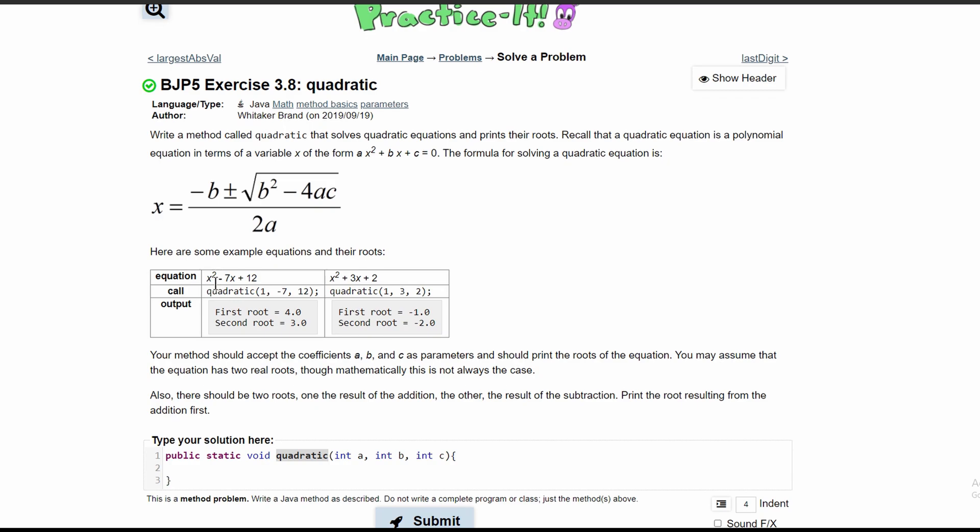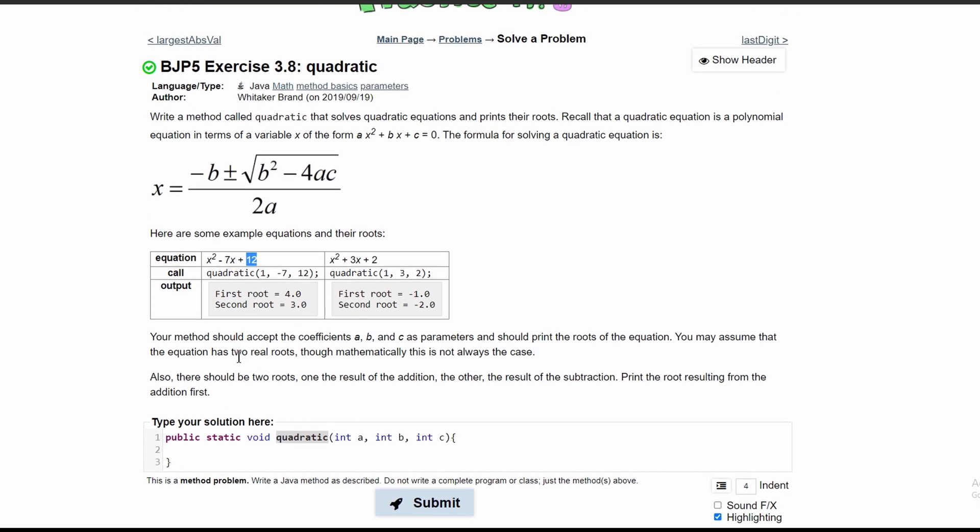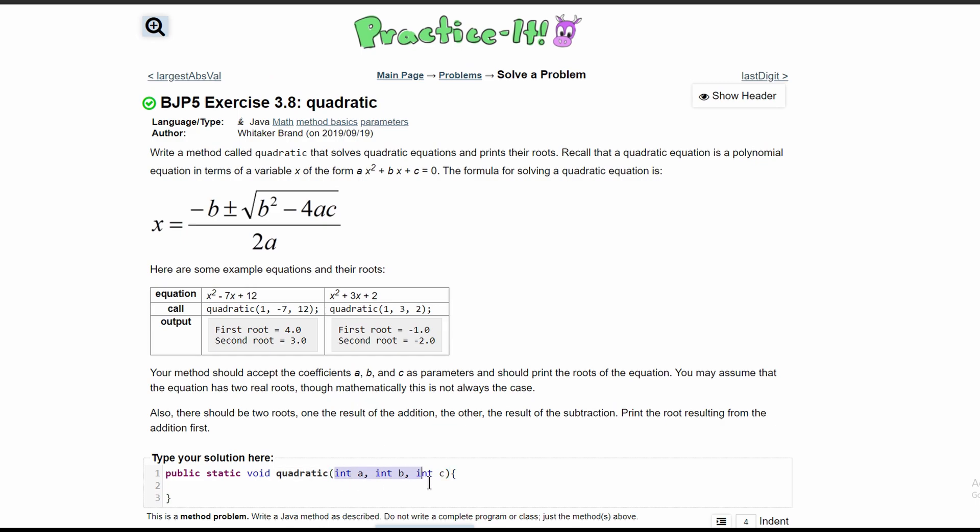How it's written is the value in front of x is a, the next value is b, and the last value is c. Our method should accept coefficients a, b, and c as parameters and should print the roots of the equation. Since we're printing, we're not returning anything, it's going to be void.